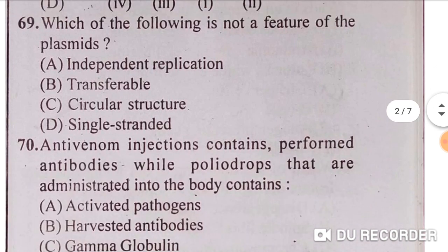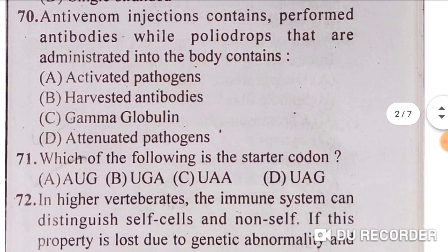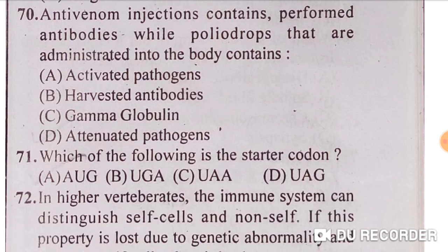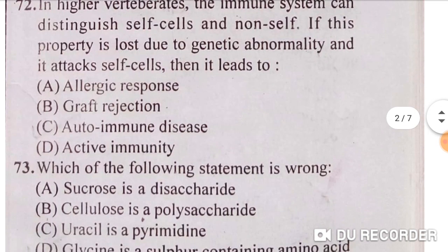Which of the following is not a feature of plasmids? Single-stranded — option D is correct, as plasmids are not single-stranded. Next: anti-venom injections contain performed antibodies, while polio drops administered into the body contain attenuated pathogens — option D is correct. Next: which of the following is the starter codon? AUG is the starter codon — option A is correct.